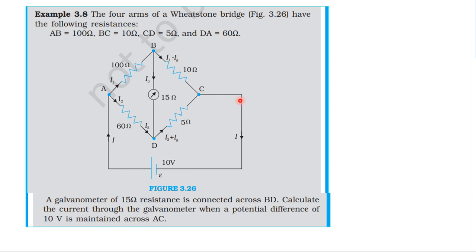Applying Kirchhoff's first law (junction rule): i1 plus i2. The total current from the battery splits at the junction — i1 and i2 are the branch currents entering the junction.